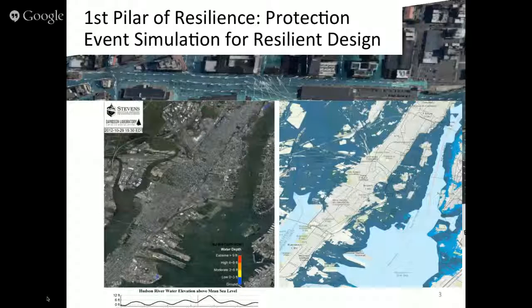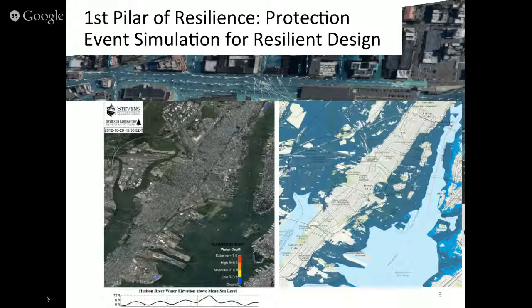I'm going to talk about pillars of resilience. When an event happens you want to recover — you want to become resilient. But what does resilient mean? Some people think resilience is putting a huge wall so when the water comes it goes away, but then you can't see the ocean anymore. Other people say let me destroy my house and build a new one — that's a different resilience.